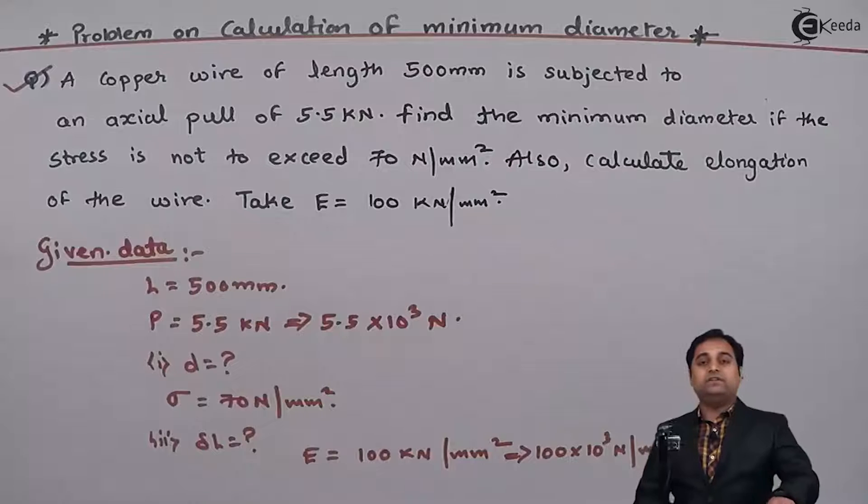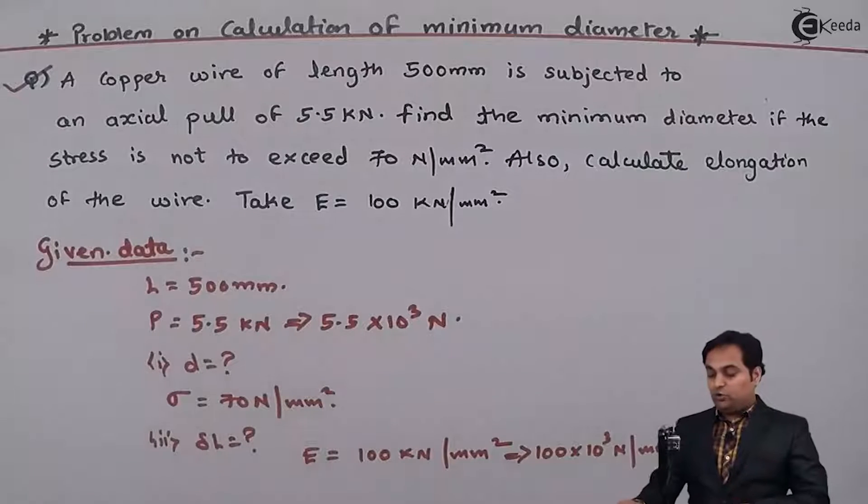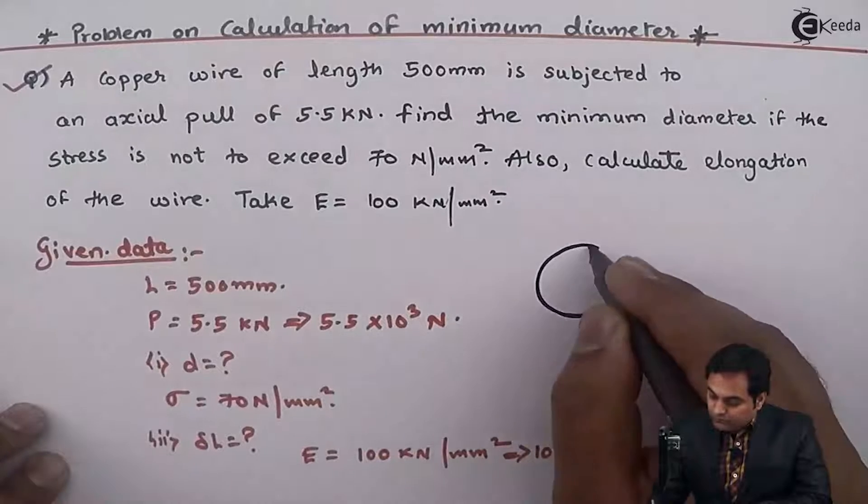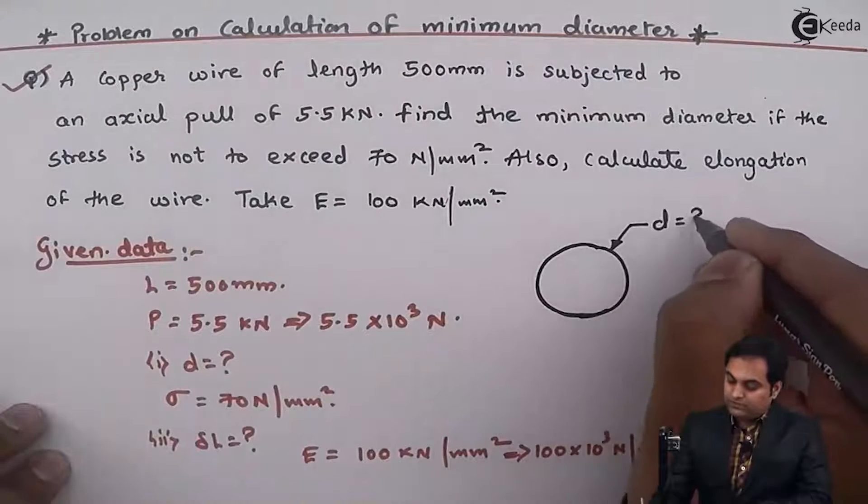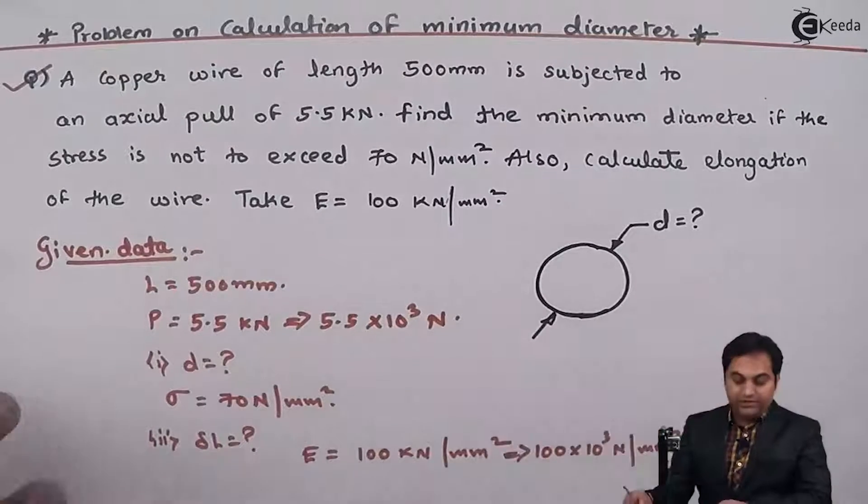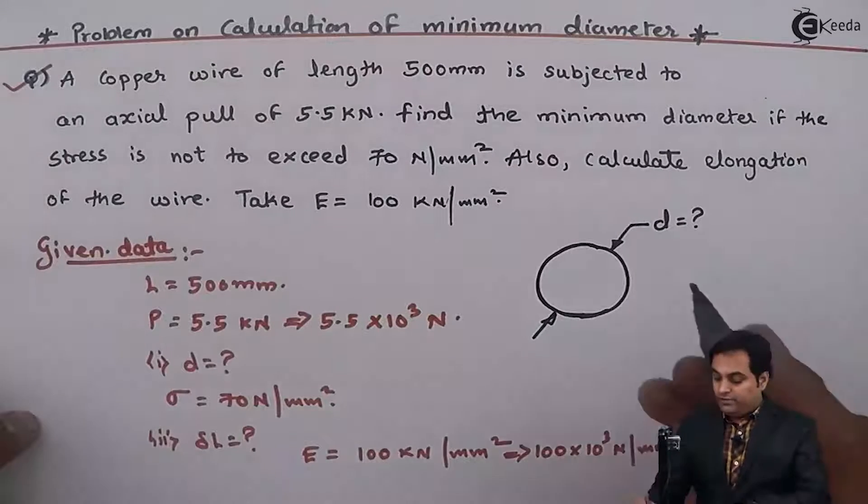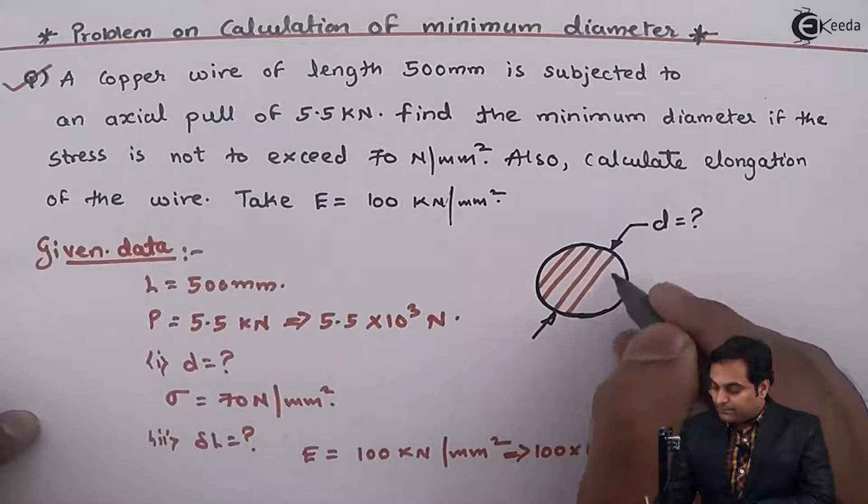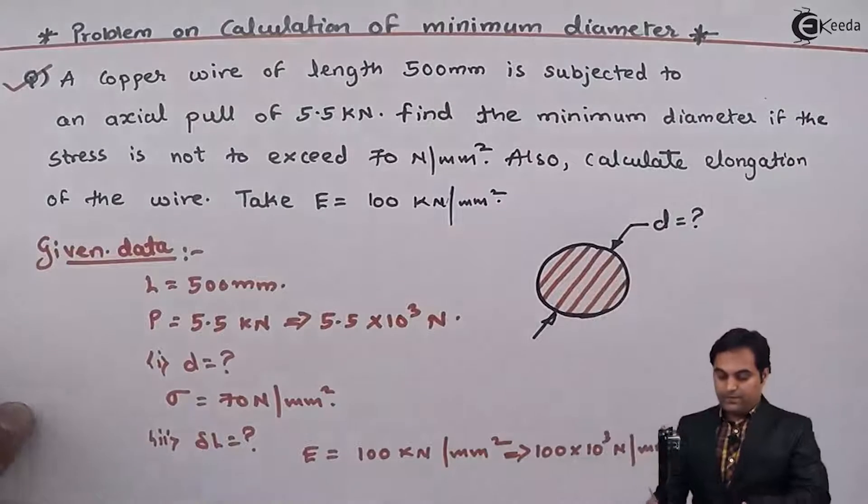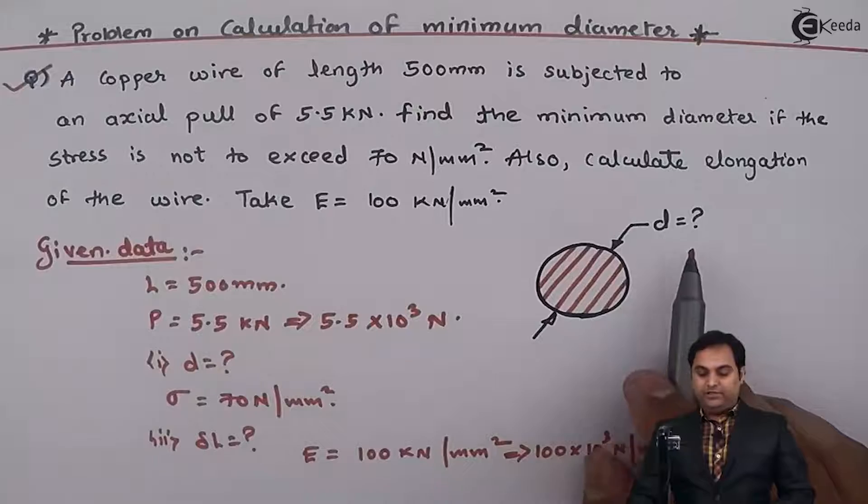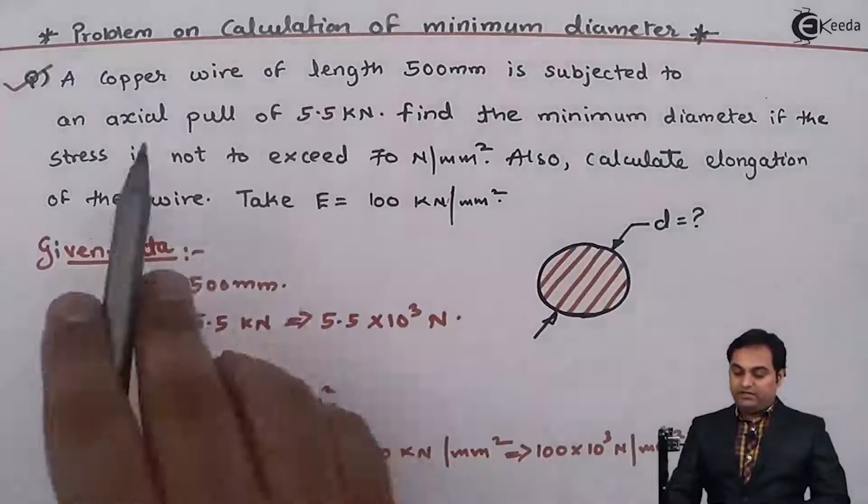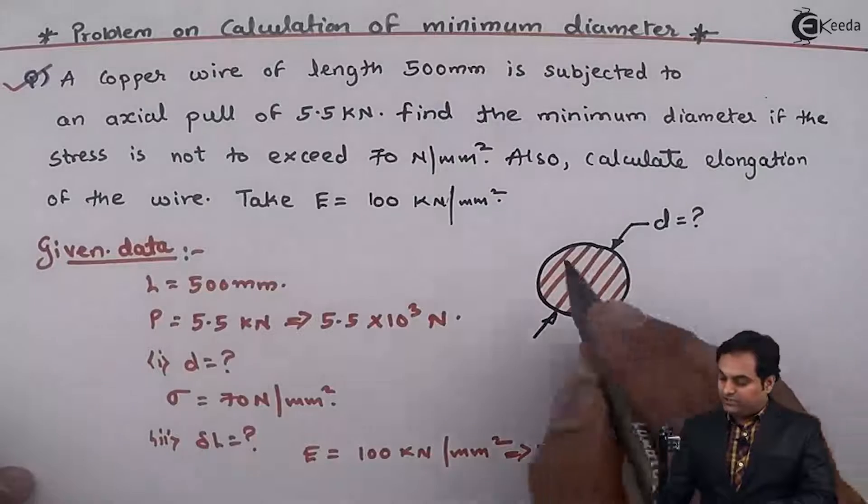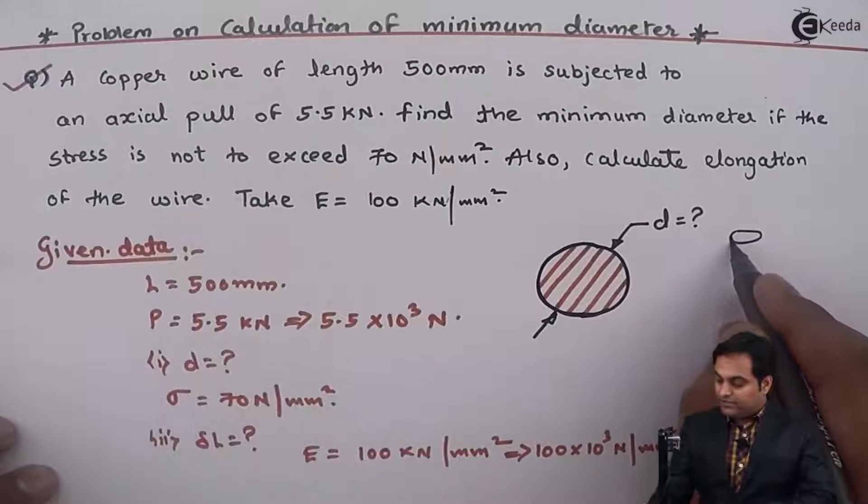As it is given in the question that it is a copper wire, so wire will be circular in cross section. So this is the unknown diameter of the wire and here this circular wire is a solid section. So we have to know this unknown diameter and when this wire is subjected to axial pull. If I see the cross section, along the length this wire is kept.